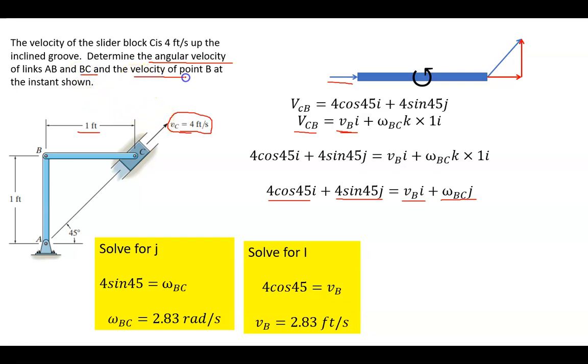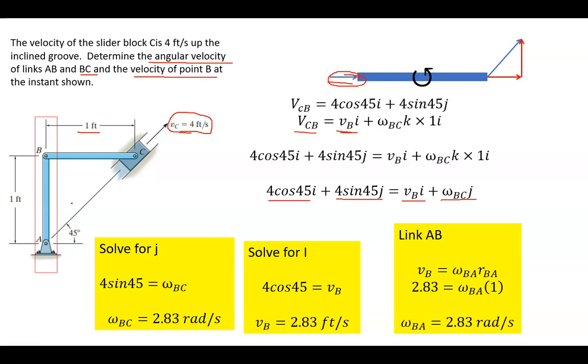So now we can also look at this breaking it through the I component. So four times the cosine of 45 is equal to VB. And that equals 2.83 feet per second. So that solved our angular velocity of BC and the velocity of point B. But now we still have to find the angular velocity of AB. So we have what's going on here, and we also have the radius coming from AB. So let's solve and get the angular velocity. For link AB, all that is is the translational velocity, that tangential velocity, is equal to the angular velocity times its radius. So 2.83 equals the angular velocity of omega sub A or beta A times 1, which is 2.83 radians per second.